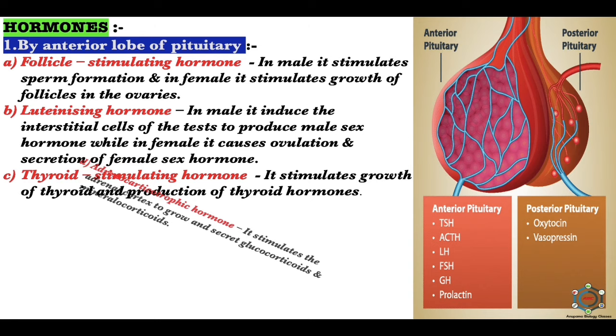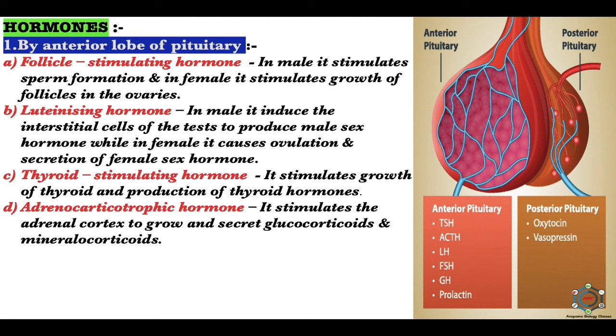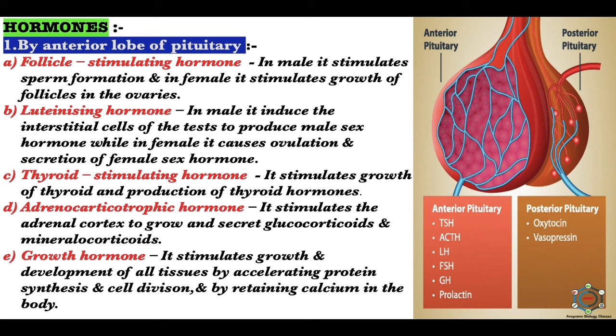Thyroid-stimulating hormone (TSH) stimulates growth of the thyroid and production of thyroid hormones. Adrenocorticotropic hormone (ACTH) stimulates the adrenal cortex to grow and secrete glucocorticoids and mineralocorticoids. Growth hormone stimulates the growth and development of all tissues by accelerating protein synthesis and cell division, retaining calcium in the body, enabling cells to take up more amino acids, mobilizing fat, and making the liver release glucose for energy supply.